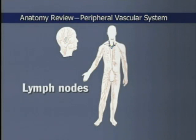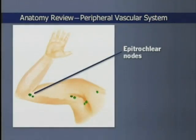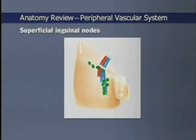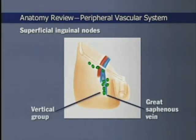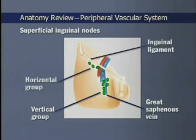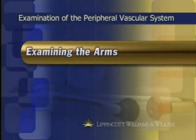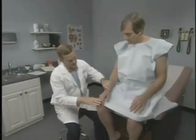Lymph nodes are normally round, oval, or bean-shaped structures. In the arms, the epitrochlear nodes, lateral axillary nodes, and central axillary nodes are palpable. In the legs, usually only the superficial inguinal nodes are palpable. These nodes are divided into two groups: the vertical group clustered over the upper part of the great saphenous vein, and the horizontal group.